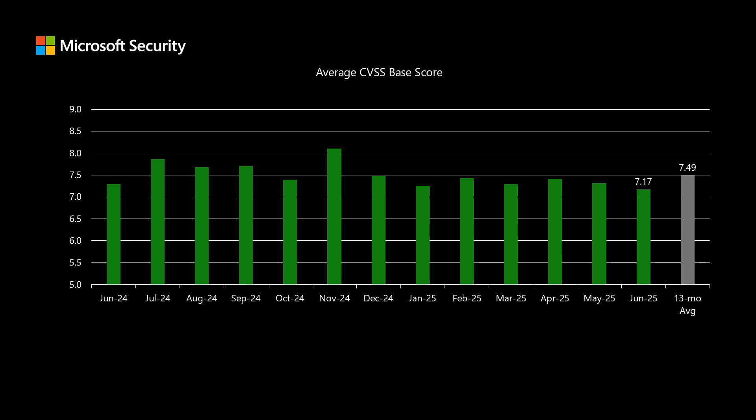The CVSS score is a great starting point when we talk about risk. It's a combination of eight separate vector strings, such as user interaction, attack complexity, and so on. It allows different products, different companies, different platforms — whether it's software or firmware — to be compared using the same scale. An 8.8 CVSS score in one product is generally going to have the same level of risk as an 8.8 CVSS score in another product, really allowing us to compare apples to apples on how serious a vulnerability is.